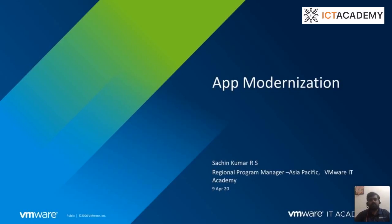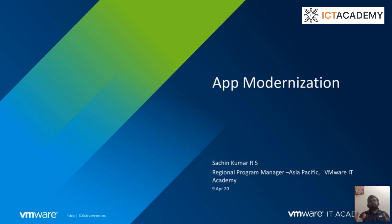The topic we are going to talk about is called app modernization — how you develop your application and maintain it consistently over a period of time in your cloud environment. The product name is called VMware Tanzu. Tanzu is the name given to the complete cloud offering of VMware, and it includes multiple products starting from cloud-native to hybrid cloud environments.